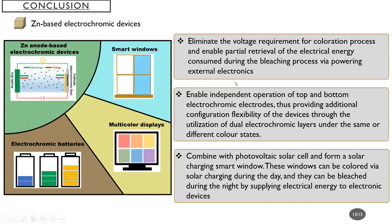In conclusion, in this presentation we introduced zinc anode-based electrochromic devices. Compared to conventional electrochromic devices, zinc anode-based devices eliminate the voltage requirement for the coloration process and enable partial retrieval of electrical energy consumed during the bleaching process. They also enable independent operation of the top and bottom electrodes, providing a color overlay strategy. The device can also be connected with a solar cell to form a solar charging smart window system, which colorizes through solar charging during the daytime and bleaches at night by powering external electronics. These are the key features of zinc anode-based electrochromic devices.